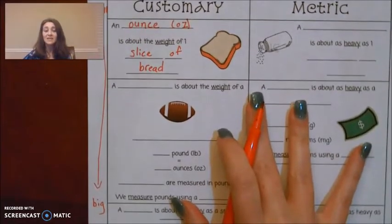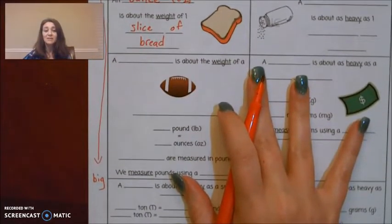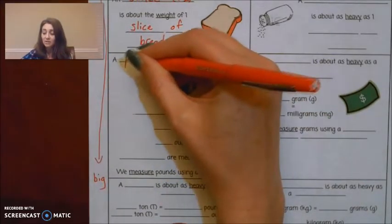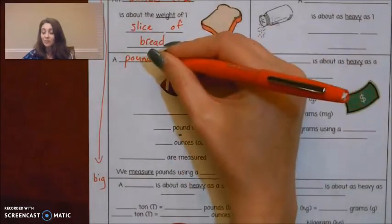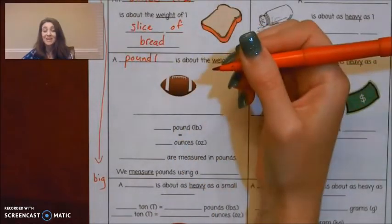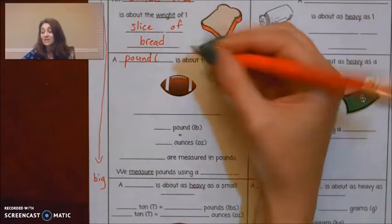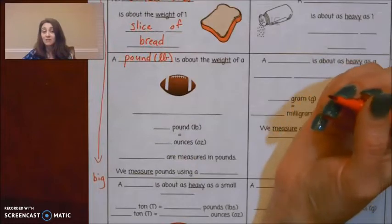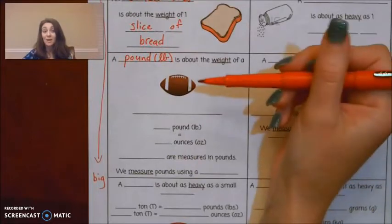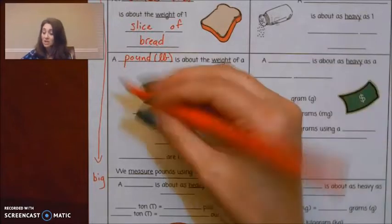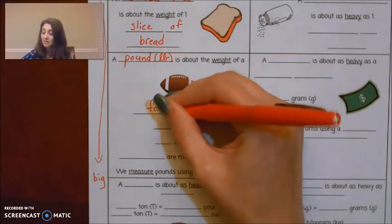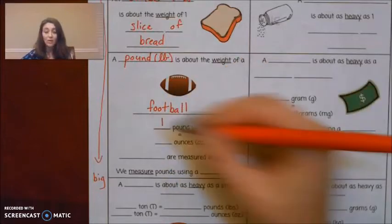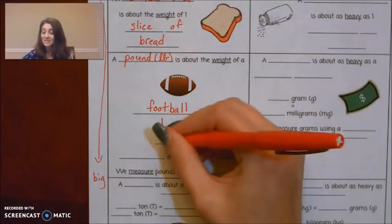Okay, moving up, the next unit of measure in customary for weight is a pound. And remember that the abbreviation for pound is LB, and I usually write it in cursive so that it doesn't look like 16. A pound is about the weight of a football. One pound equals 16 ounces.